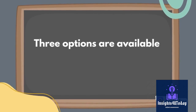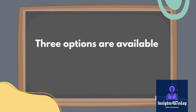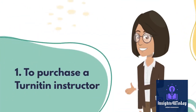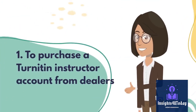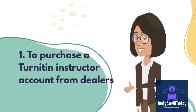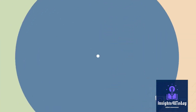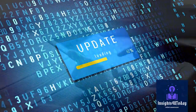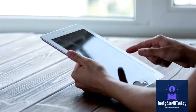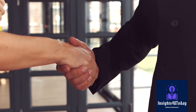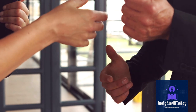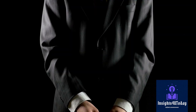Three options are available to check your AI scores on Turnitin. The first is to purchase a Turnitin instructor account from dealers. Typically, Turnitin only sells its license to institutions — they do not sell to individuals. Turnitin is constantly updating its models and it is almost impossible to get a free instructor account. However, some dealers buy under the umbrella of an institution and sell to individuals. If you need information about the dealer I got mine from, check the description box for the video.